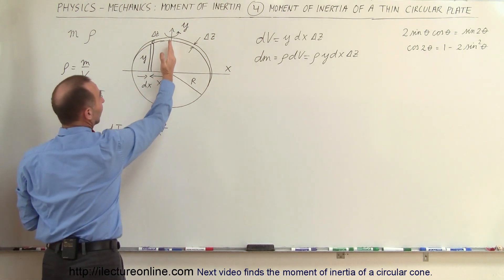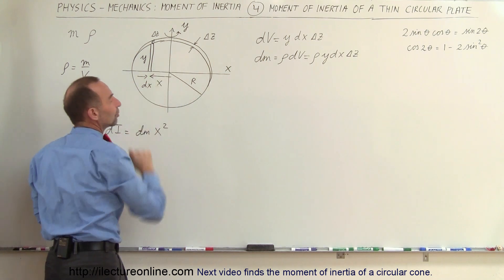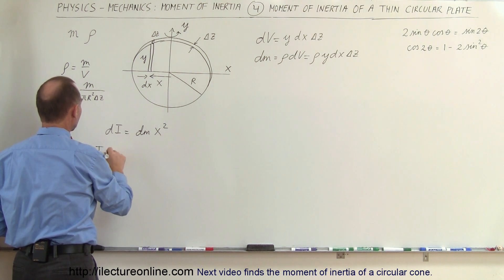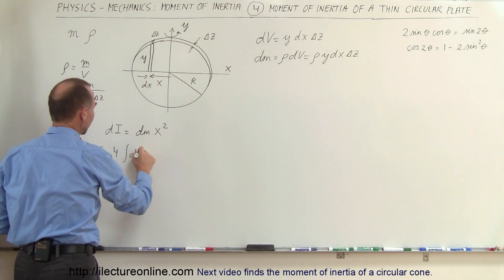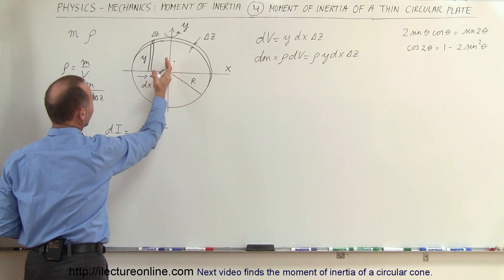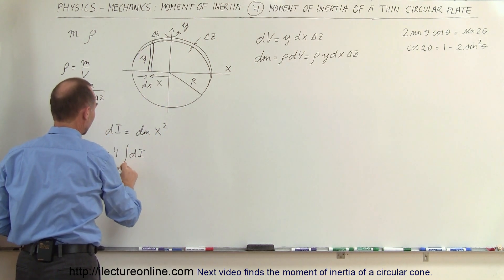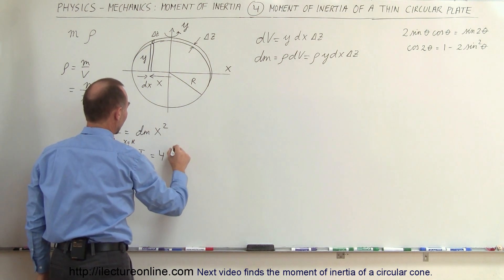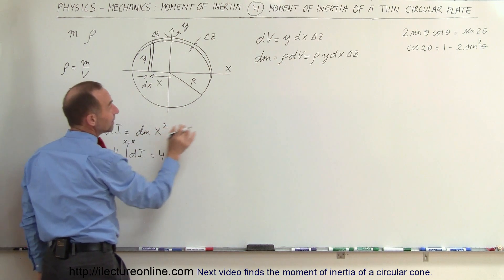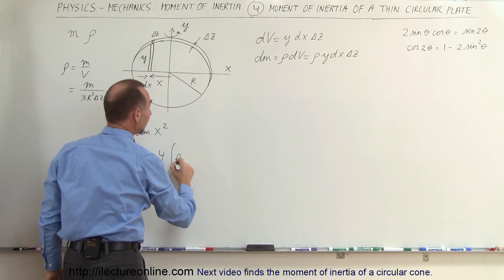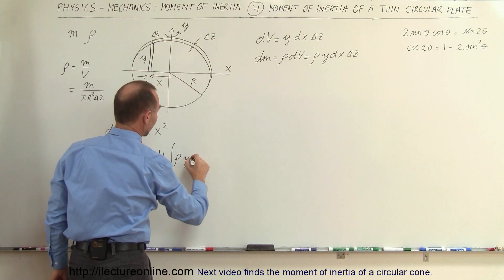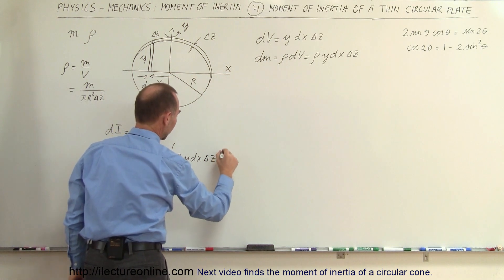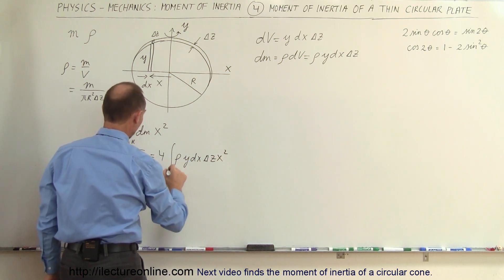We're going to integrate over one quadrant and then multiply by four because we have four quadrants. So the moment of inertia of the whole disc equals four times the integral of all the dI's, integrated from x equals 0 to x equals r. That becomes four times the integral of the density times y times dx times delta z times x squared, with limits from 0 to r.